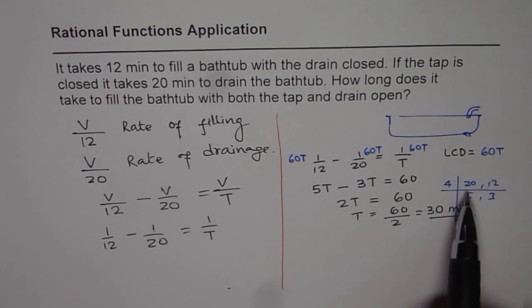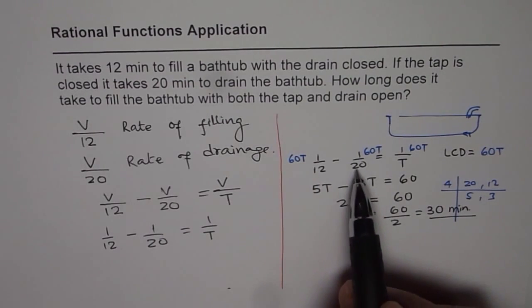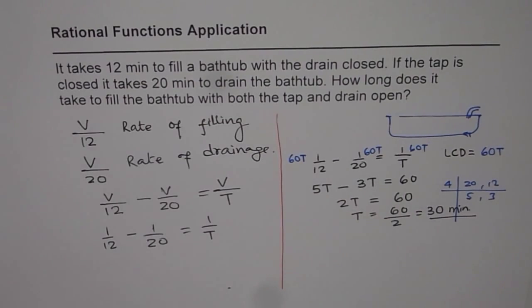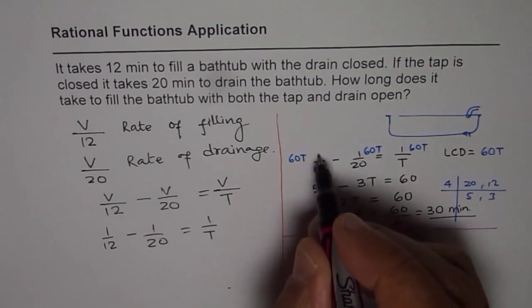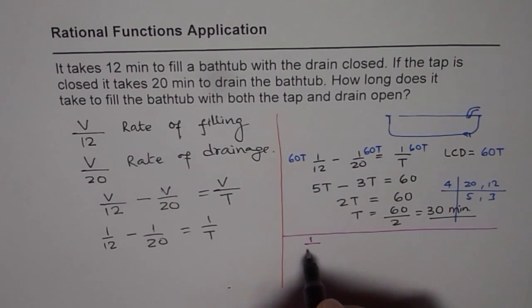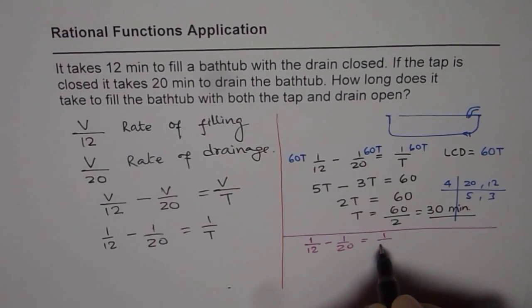Well, for some of you who find it kind of tricky and may not use lowest common denominator, you can multiply by 12 times 20 times T. So let me show you that also. So you get 30 minutes, and let me now do the same thing. So it is 1 over 12 minus 1 over 20 equals to 1 over T.